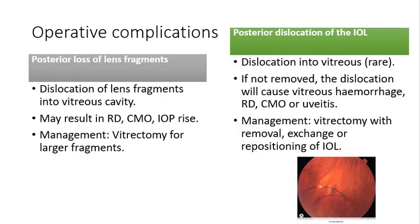Two more operative complications are posterior loss of lens fragments and posterior dislocation of the IOL. In the first, lens fragments dislocate into the vitreous cavity and can cause retinal detachment, cystoid macular edema, or an IOP rise; large fragments will require vitrectomy. In the second, the newly implanted intraocular lens dislocates into the vitreous — if not removed it can cause vitreous hemorrhage, retinal detachment, macular edema, or uveitis, requiring vitrectomy and replacement of the lens.